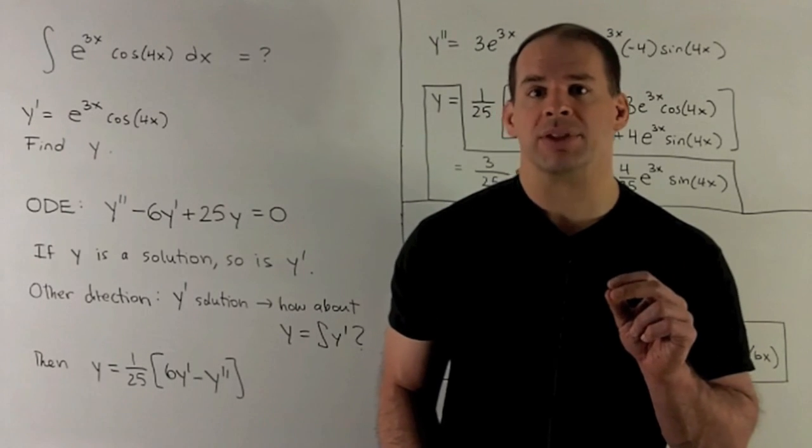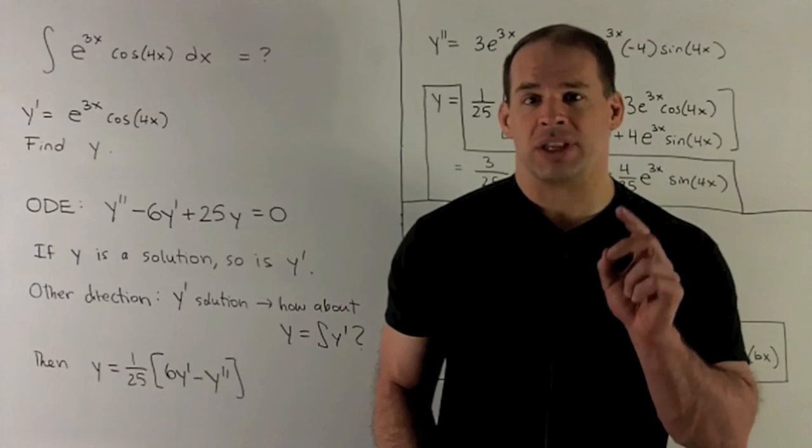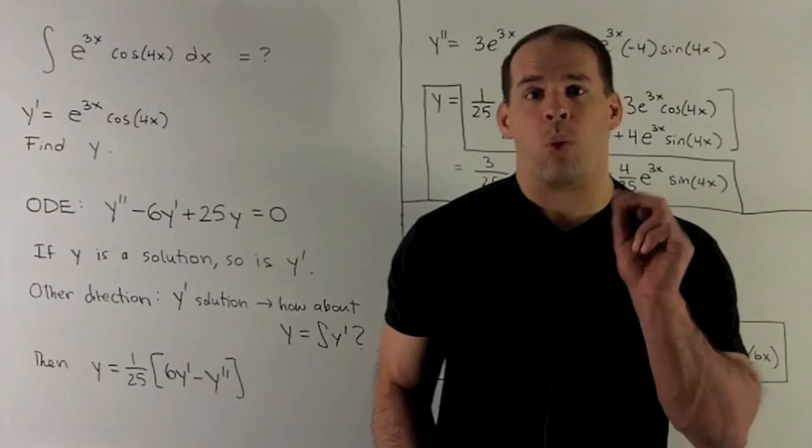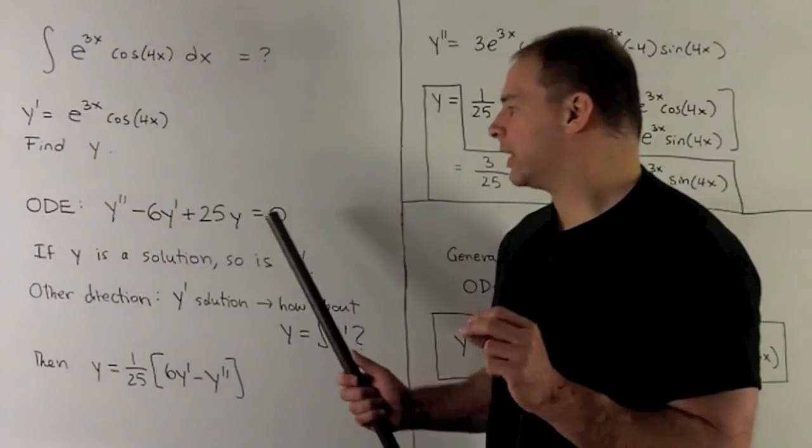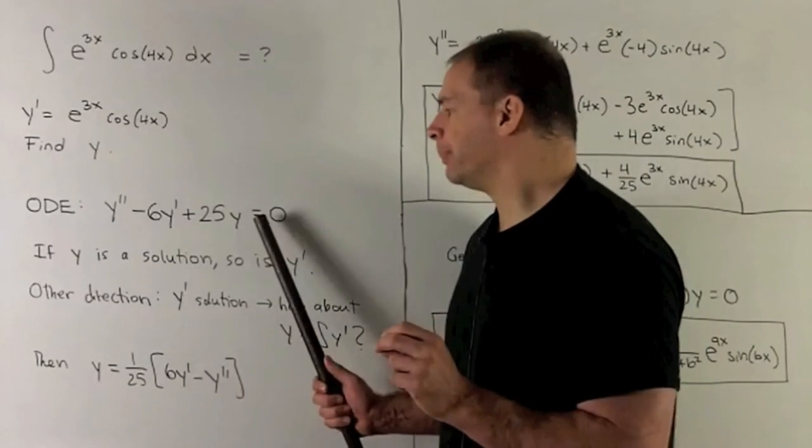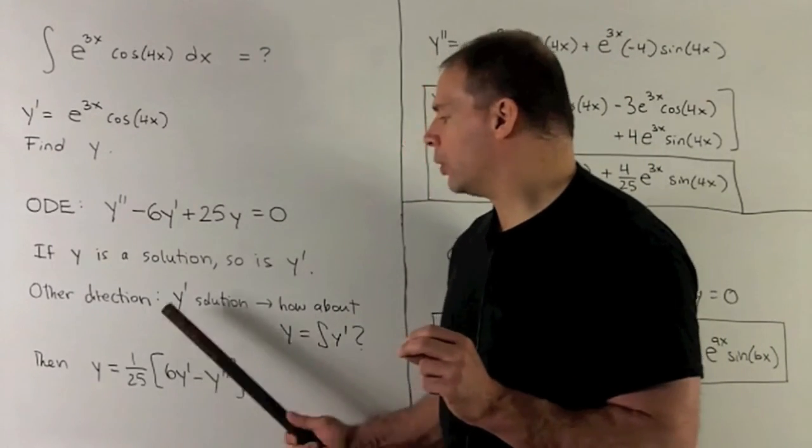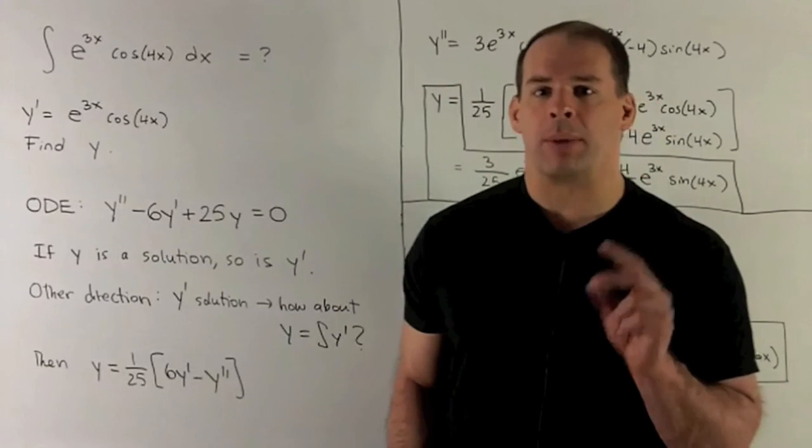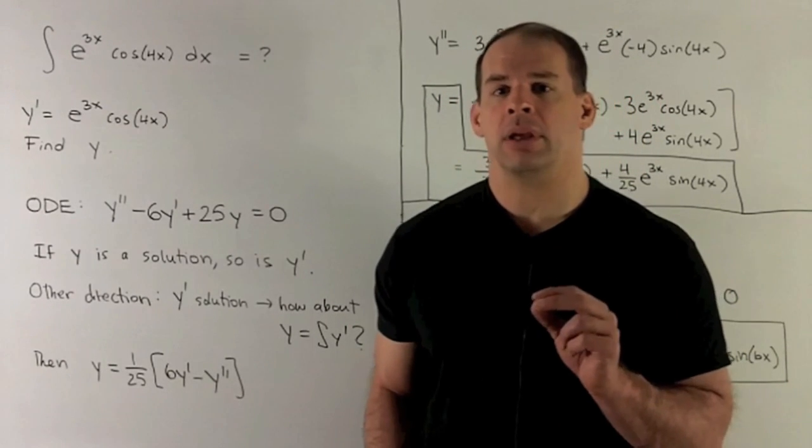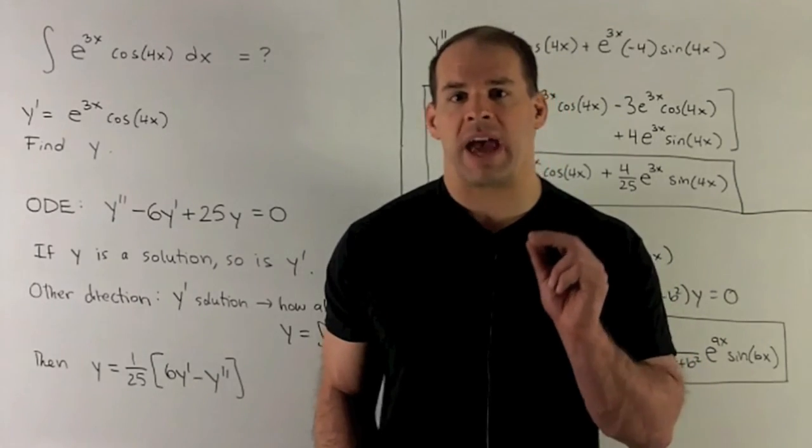So let's see what happens. So if I suppose that there's at least one, then that y is going to satisfy. Can we isolate the y in the equation? It's going to be y equals 1/25 times 6y prime minus y double prime. Okay, this is good. Look at what just happened.